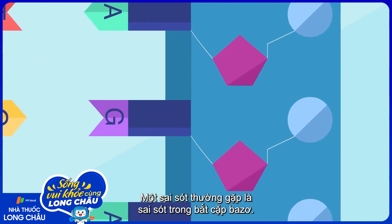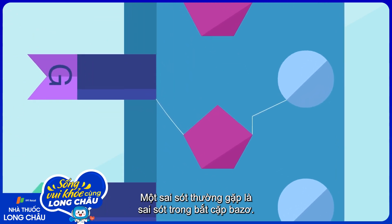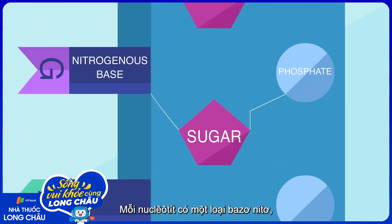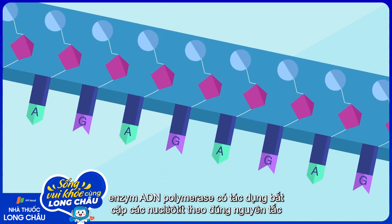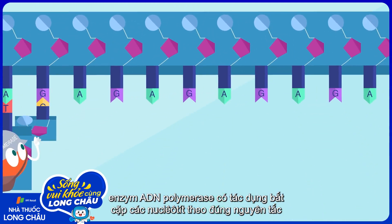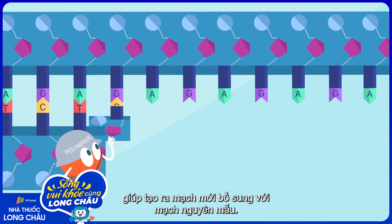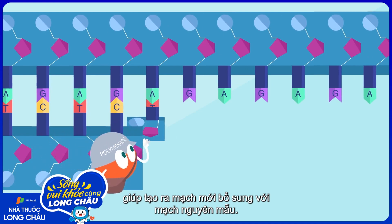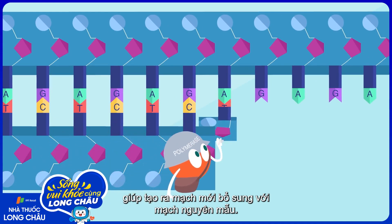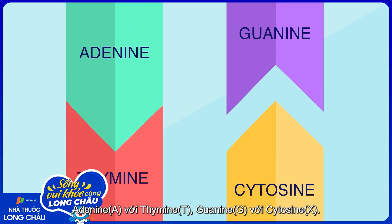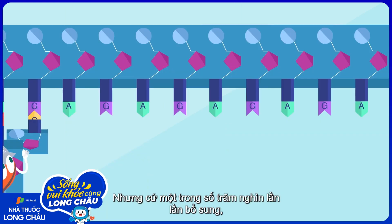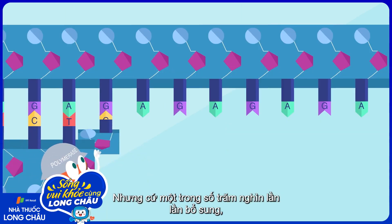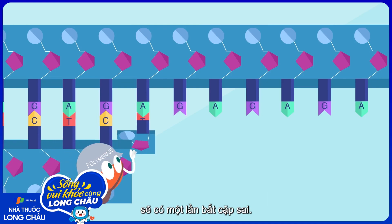One common error is base mismatches. Each nucleotide contains a base, and during DNA replication, the enzyme DNA polymerase is supposed to bring in the right partner to pair with every base on each template strand — adenine with thymine, and guanine with cytosine. But about once every 100,000 additions, it makes a mistake.